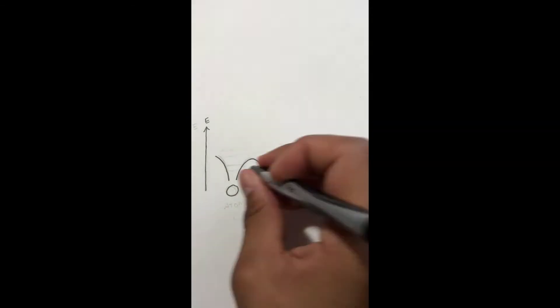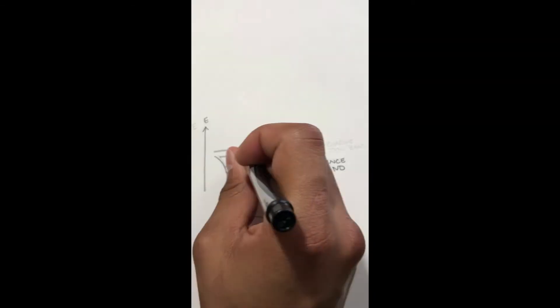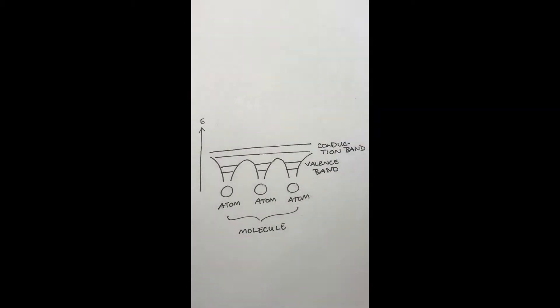Well let's look at the band theory of solids to understand conduction in semiconductors. Available energy states in solids form bands. In order to have conduction there must be electrons in the conduction band where they can move freely through the material.